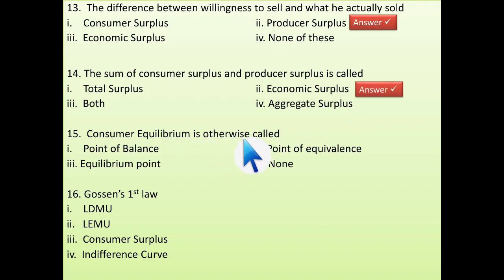Consumer equilibrium is otherwise called point of balance. I have mentioned in my lecture why it is point of balance. Because, it is the point where we can get maximum profit and minimum loss. So, this is the point of balance.